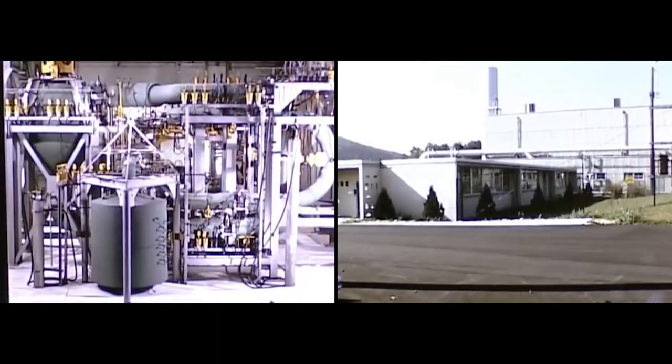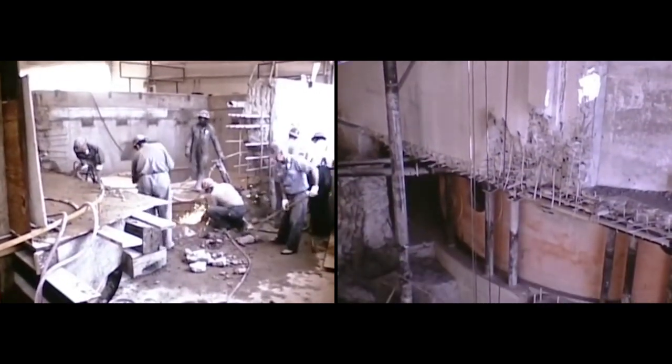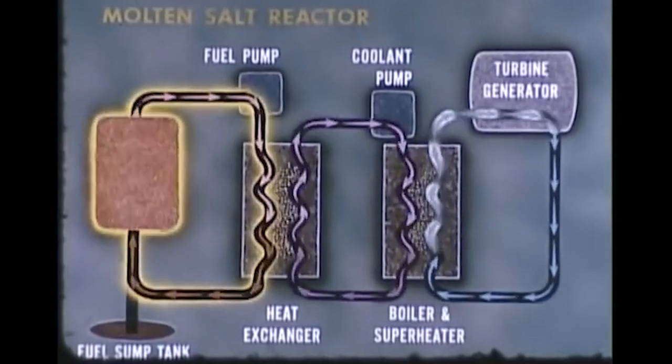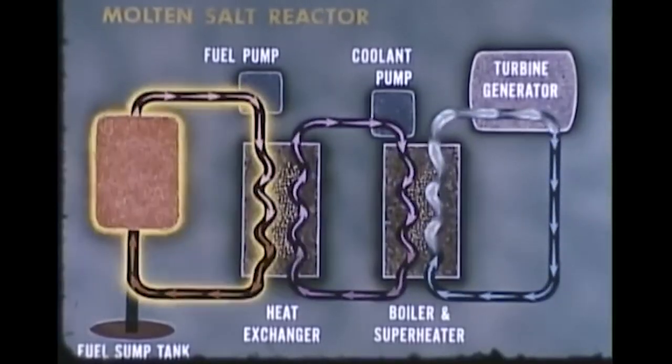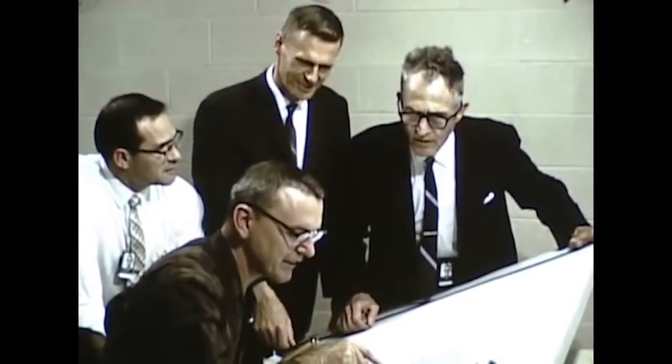Molten salt reactors for the production of electrical power were studied at Oak Ridge National Laboratory from 1957 to 1960. The Molten Salt Reactor Experiment, MSRE. Preliminary design of the reactor began in May 1960.